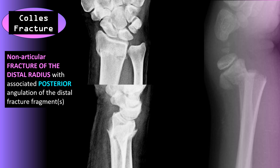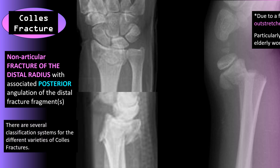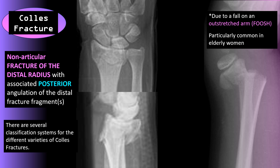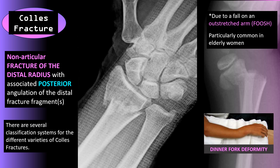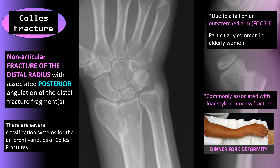A Colles fracture is a non-articular fracture of the distal radius with associated posterior angulation of the distal fracture fragments. This type of fracture is particularly common in elderly women and is often due to a fall on an outstretched hand. There are several classification systems for different varieties of Colles fractures, many of which can lead to surgery. Other features include an associated ulnar styloid process fracture and the clinical presentation of a dinner fork deformity of the arm.